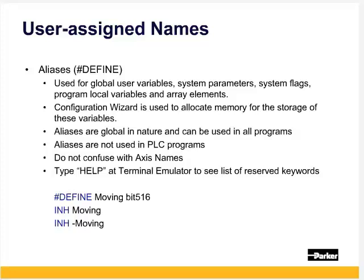Aliases are global in nature even though they may be pointing to something that is local in nature. For example, if you name a local variable LV0 with an alias of count, every program that also has an LV0 variable will show that alias count when you do list in the terminal window instead of LV0, even though it may be used for something else. Don't confuse this with the axis name — the axis name is incorrectly referred to as an alias in ACR view. It's only recognized in its own master program and not other programs, so it's an axis name, not the same as a user alias.